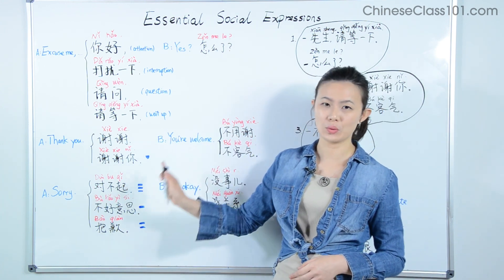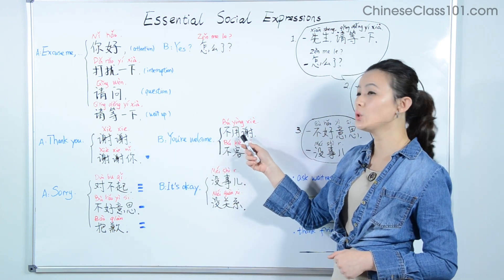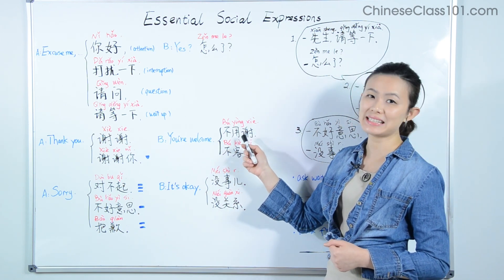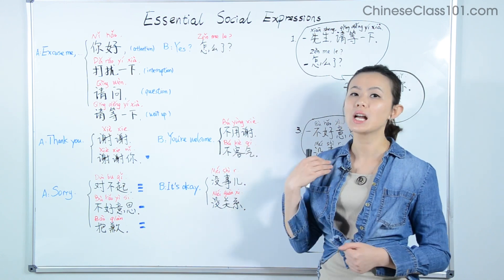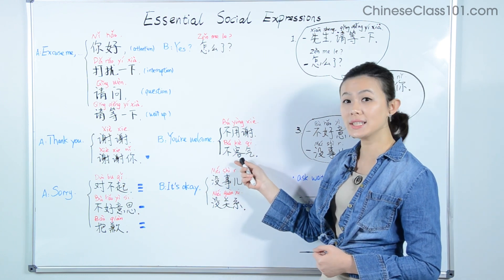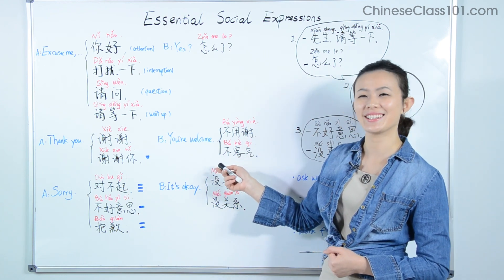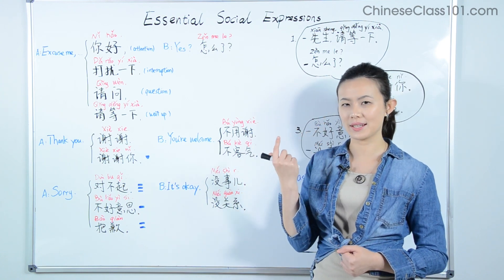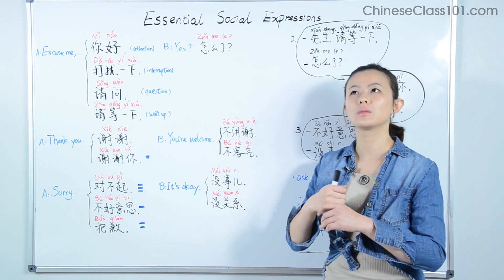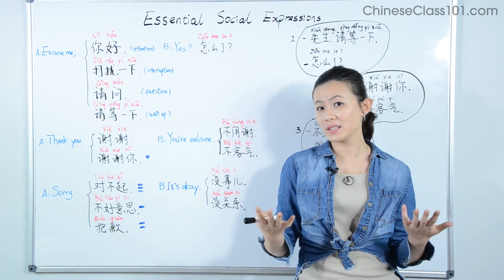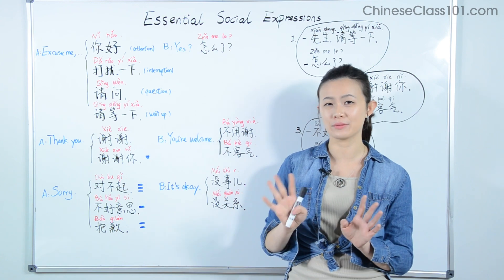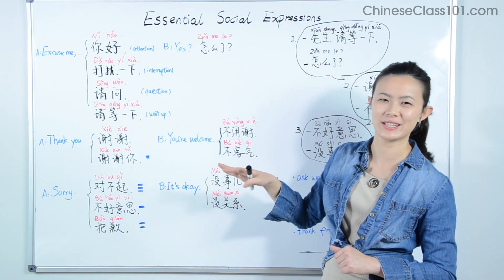When someone says 谢谢 or 谢谢你 to you, you can respond in two ways. First: 不用谢. 不 means 'not,' 用 means 'need,' and 谢 means 'to thank,' so 不用谢 means 'No need to thank me — you're welcome.' The second way is 不客气. 不 means 'not,' and 客气 refers to acting with too many formalities or being too courteous, putting distance between people. So 不客气 means 'Don't mention it — you're welcome, no need for formalities.'